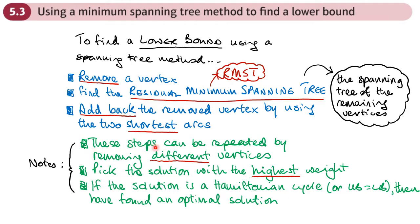These steps can be repeated by removing different vertices. On a computer, we'd remove vertex A, run through this algorithm, remove vertex B, and so on, getting different solutions. We'd pick the solution with the highest weight, because we want this lower bound to be close to the upper bound, which restricts the range of values where we're going to find a solution.